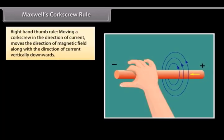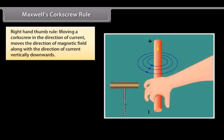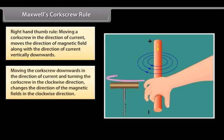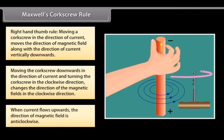Maxwell's Corkscrew Rule, also known as Right-Hand Thumb Rule, defines that moving a corkscrew in the direction of current moves the direction of magnetic field along with the direction of current vertically downwards. If we move the corkscrew downwards in the direction of current and the handle of corkscrew is turned in the clockwise direction, then the direction of the magnetic field is in the clockwise direction. So, when current flows upwards, the direction of magnetic field changes and is anticlockwise.